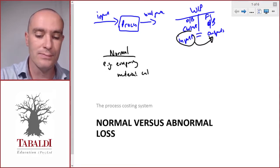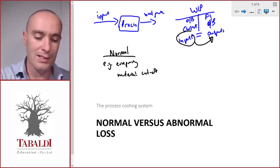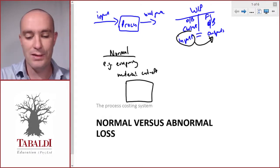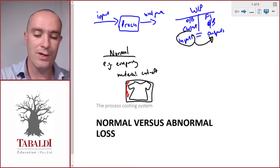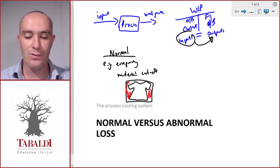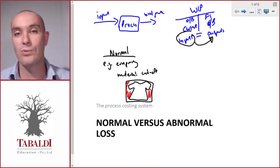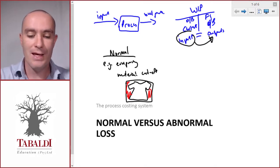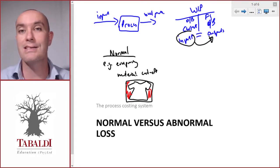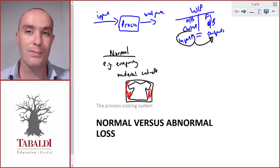Examples of normal losses are like evaporating chemicals or material cut-offs. Think of making a dress. We have the sheet of material and we cut out the dress and all the off cuts have to be thrown away. It's already designed in such a way that we have minimal cut-offs, but it's unavoidable. If we have normal losses, it doesn't indicate that there's something wrong in the process.